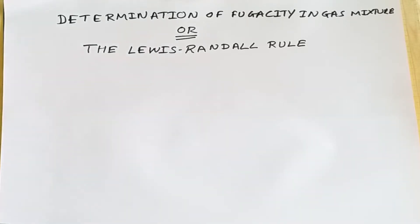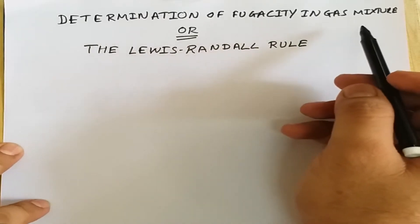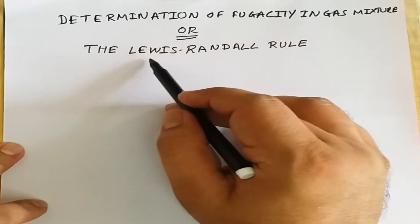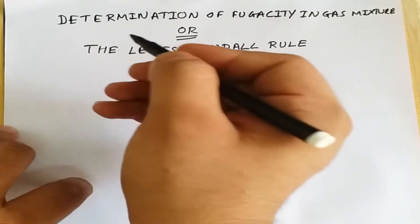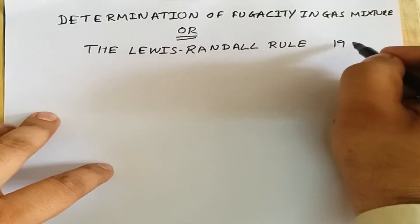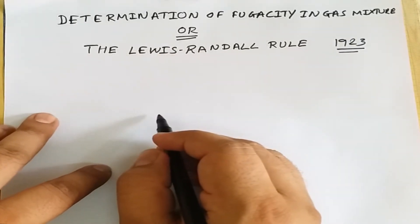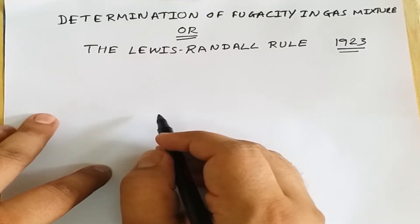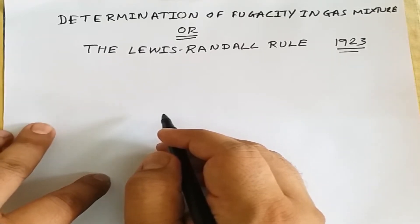Welcome back. Today we are going to discuss the determination of fugacity in gas mixtures, also popularly known as the Lewis-Randall rule. This rule or derivation was proposed by Lewis and Randall in around 1923, and with the help of this derivation we can deduce the fugacity of individual components as well as the fugacity of gases in a mixture.